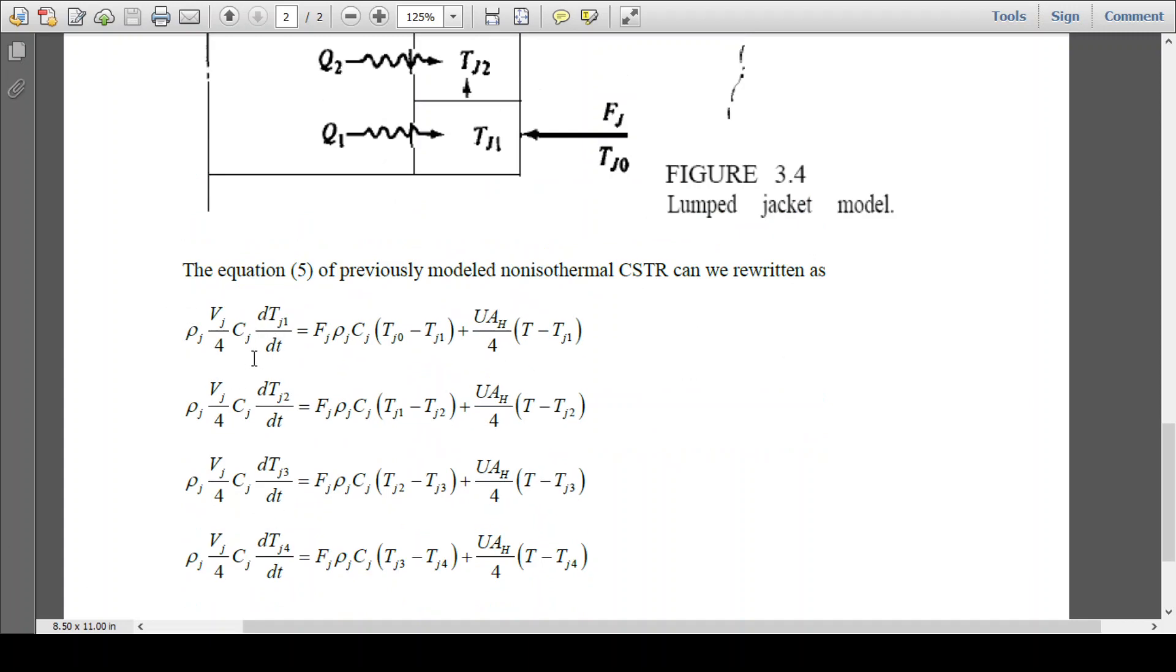So this is the energy accumulated within the material here of the jacket in the first jacket here. So this is ρj Vj/4 and cj/4, tj1. This is actually the fluid here, the fluid is entering to the lump 1.